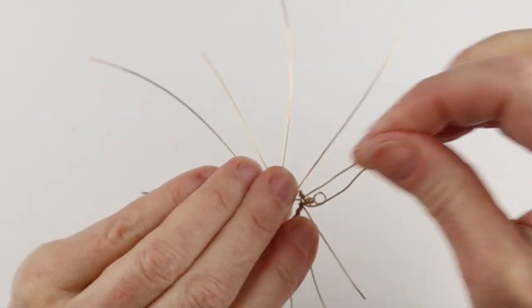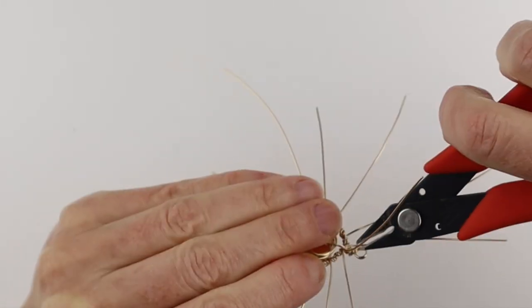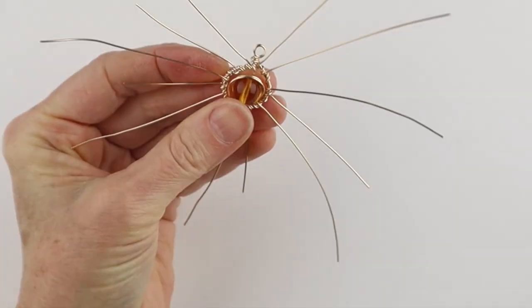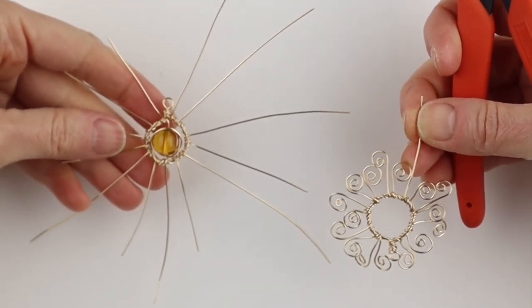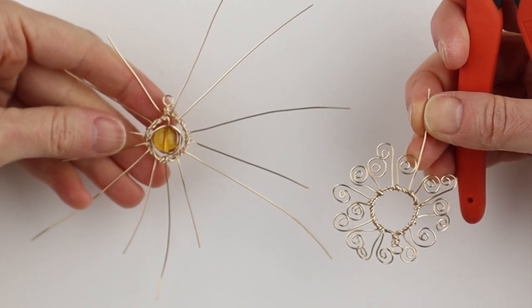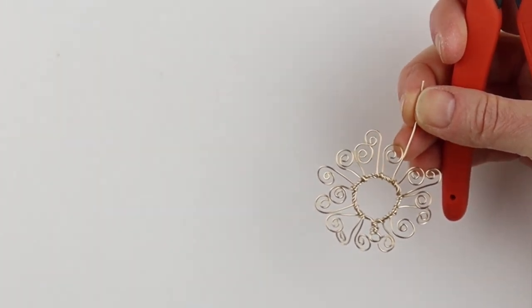And then we want to just pull these out like the sun rays. And if you have too many wires, just take your cutters and clip one off. On this sample, I actually made them quite long and I spiraled them. I'm going to show you how to do the spirals first.